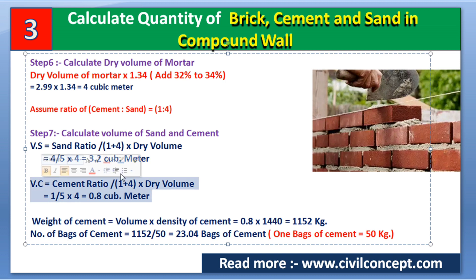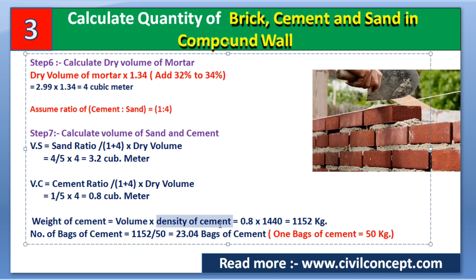We have the volume of cement as 0.8 cubic meters, but cement is purchased in bags, so we need to convert. Weight of cement = volume × density of cement = 0.8 × 1440 = 1152 kg. Since one bag of cement equals 50 kg, number of bags = 1152 ÷ 50 = 23.04 bags of cement.